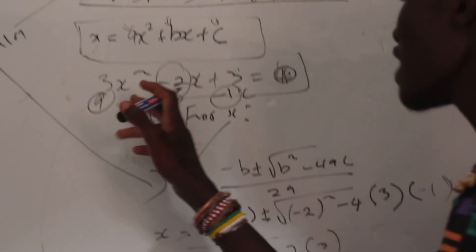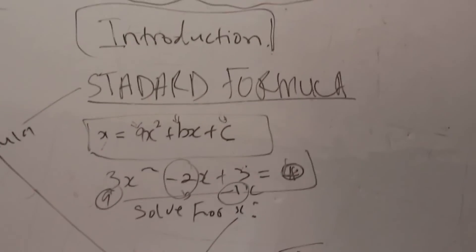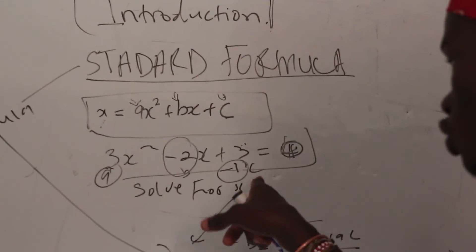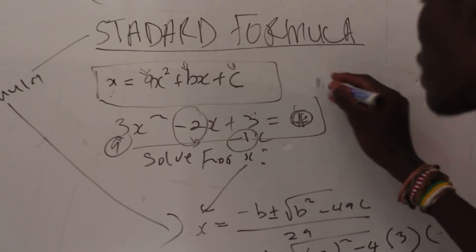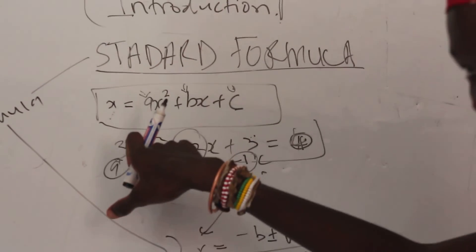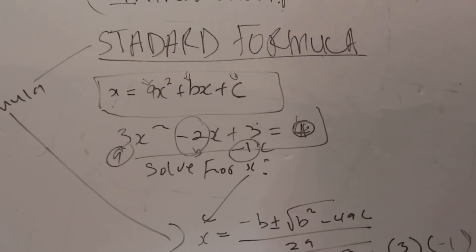Now listen, every time you have a question like this, just know that you're going to have two answers. It's always going to be two answers. If you get one answer, there's a problem, unless otherwise. There's always going to be two answers because this is what we call a quadratic equation.